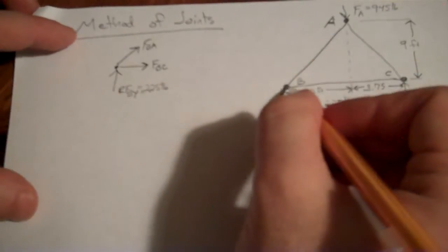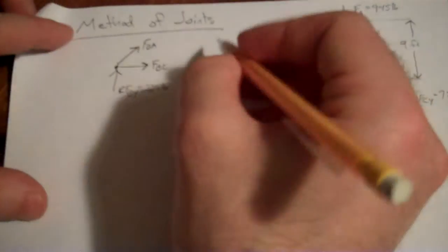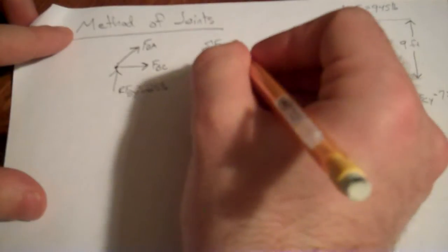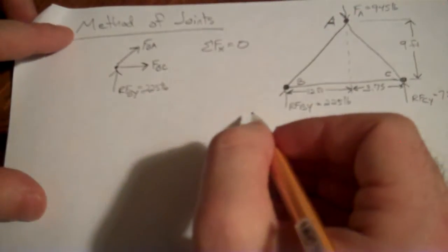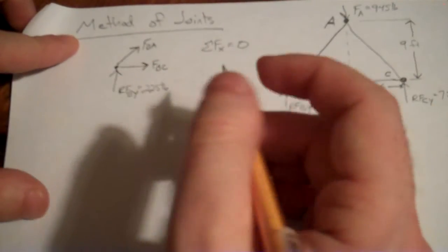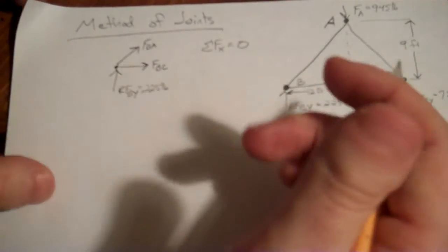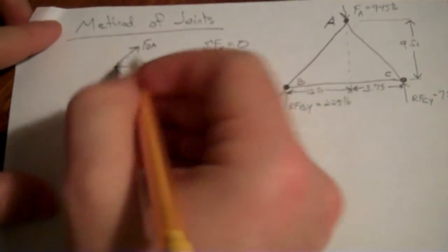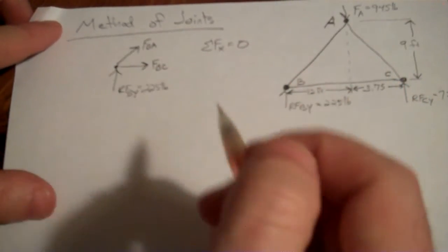All right, so again, this joint is not moving, which means the sum of the forces in the X and the Y have to be equal to zero. But we take a look, we have a force at an angle. We don't like forces at angles, we want to deal with forces that are vertical and horizontal. So we need to break FBA into components.